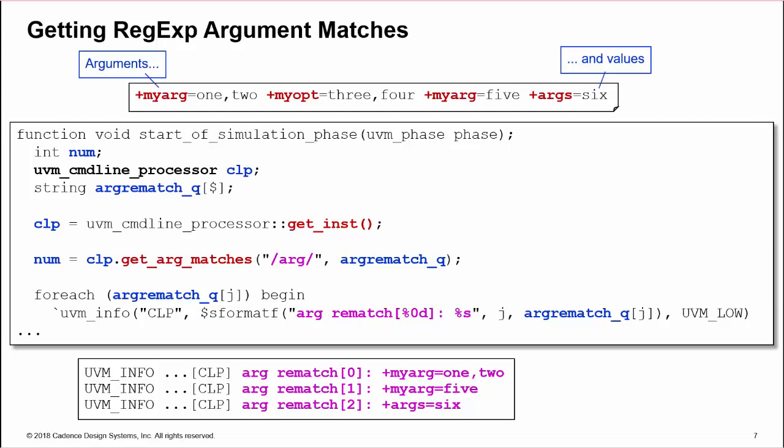By default, getArgMatches reads arguments beginning with a string. But by enclosing the string in backslashes, we can define an extended regular expression to match arguments. Here, slash arg slash will match any arguments containing arg and so writes the 2 plus myArg and single plus args arguments to the queue.